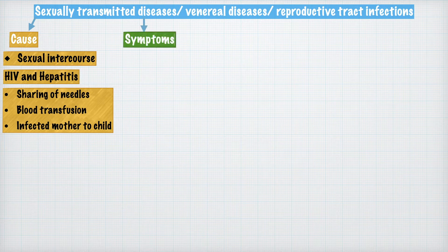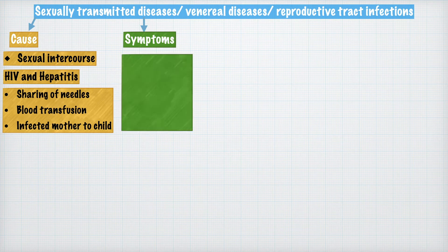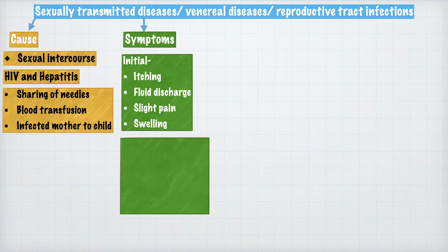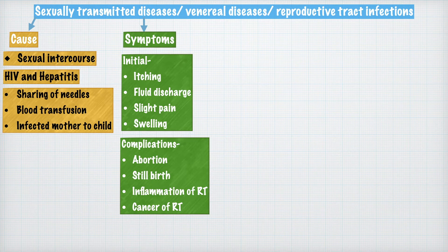Sexually transmitted diseases have some initial common symptoms. These symptoms include itching, fluid discharge, slight pain, and swelling. If these symptoms are ignored, it may lead to further complications like abortion, stillbirth, and inflammation of the reproductive tract.